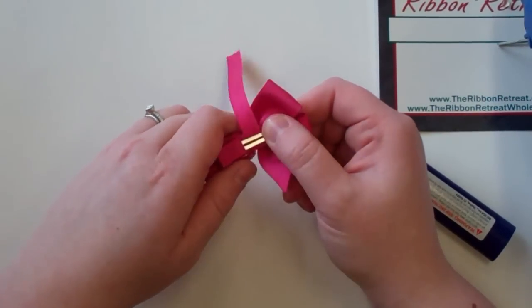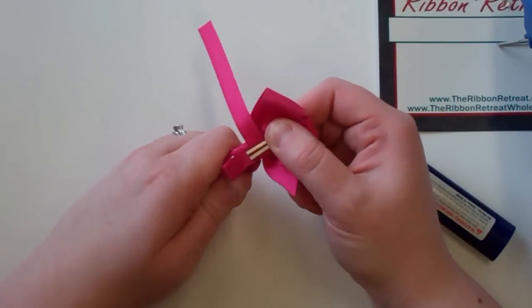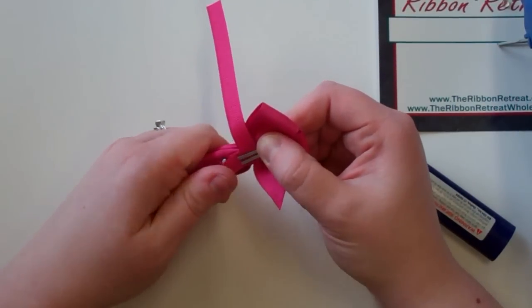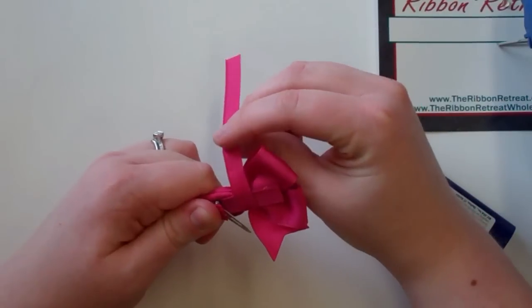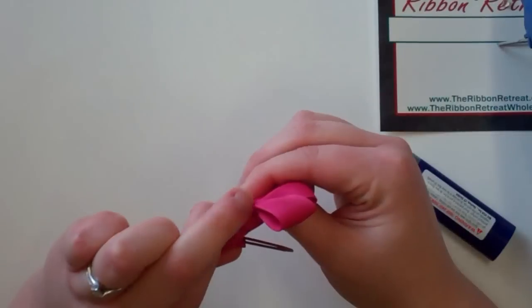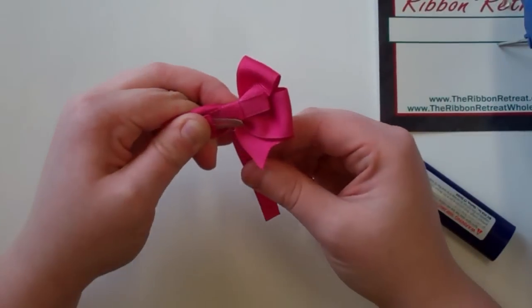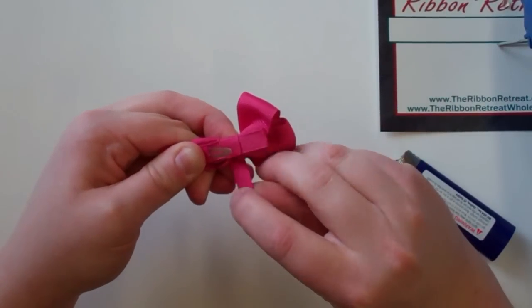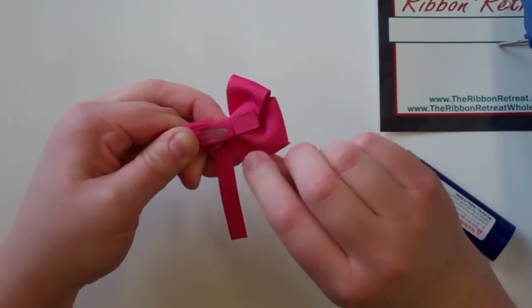I'm going to fold my loops down just so I can open the clip easier. I'm going to take this and start wrapping it around the front of the clip. I'm going to use my middle finger to hold that in place, and then kind of slide that tail out of the way.